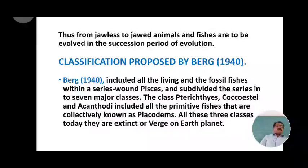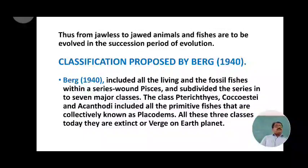Among all the classification schemes proposed — by Blungers, Reagan, Romer and others — the most widely and universally accepted is Berg's classification of 1940. Berg included all living and fossil fishes within a series and subdivided the series into 7 major classes.